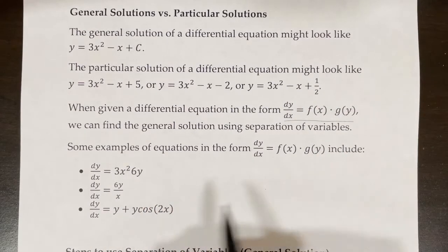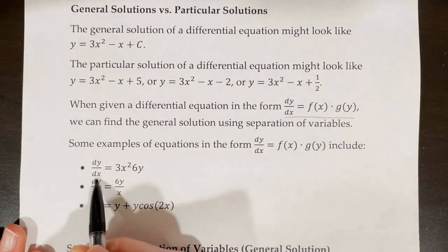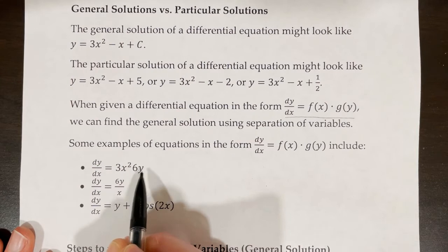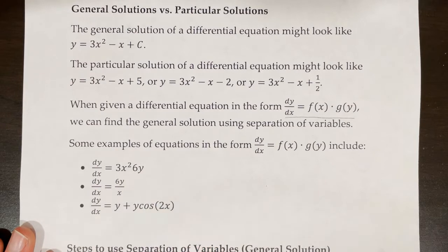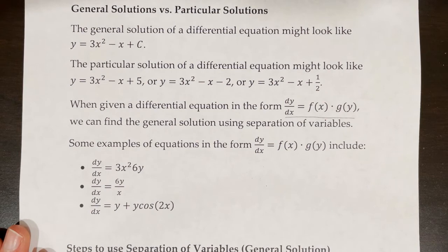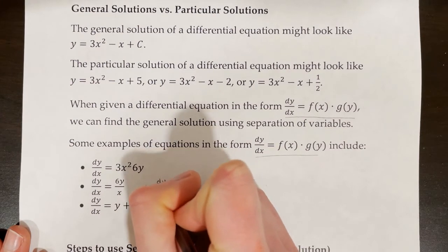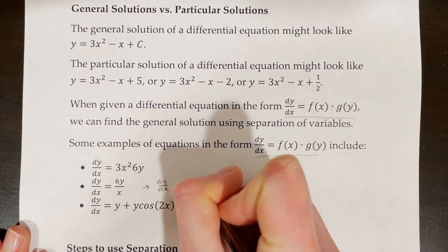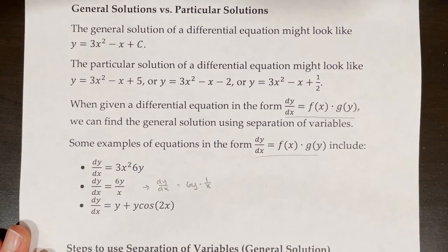Some examples of equations in the form dy/dx = f(x)·g(y) include dy/dx = 3x²·6y, where we have a function in terms of x and a function in terms of y multiplied together. Alternatively, dy/dx = 6y/x can be rearranged to dy/dx = 6y · (1/x), now written in that format. This is what we call a separable equation because we can separate the x and y.